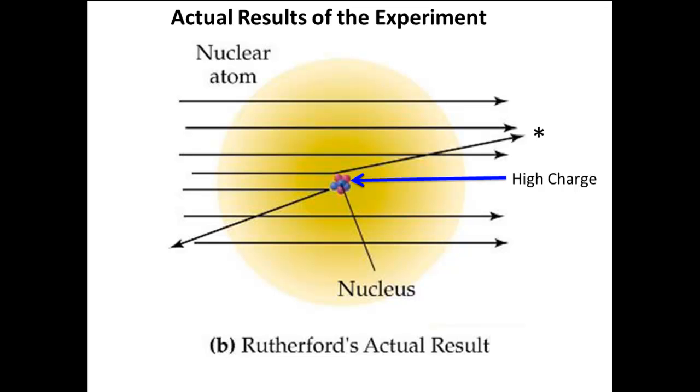In order for the alpha particle to be reflected, there needed to be something much more massive that the alpha particle hit. A bowling ball does not bounce off a tennis ball, but a tennis ball does bounce off a bowling ball.